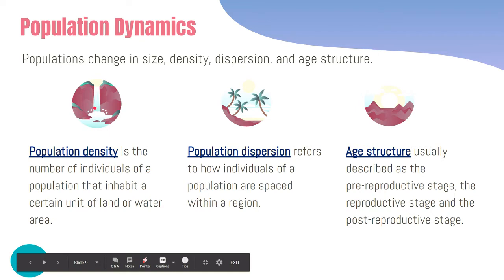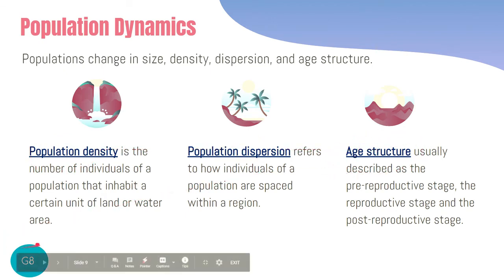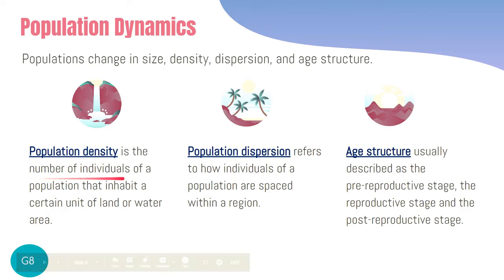When we talk about population dynamics, we also have to be familiar with the different factors that affect it, such as population density, population dispersion, and the age structure of the population. Let's look at them one by one. Population density refers to the number of individuals of a population that inhabit a particular region, land, or water area — essentially, how many individuals are in that area.